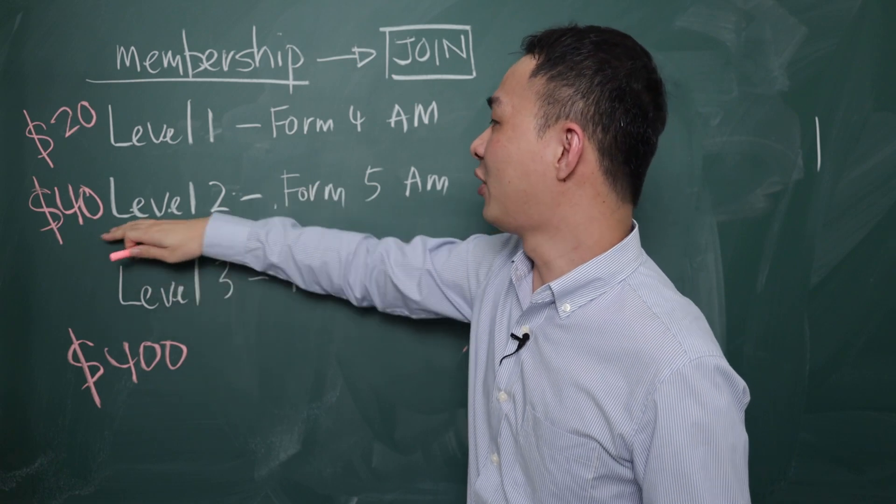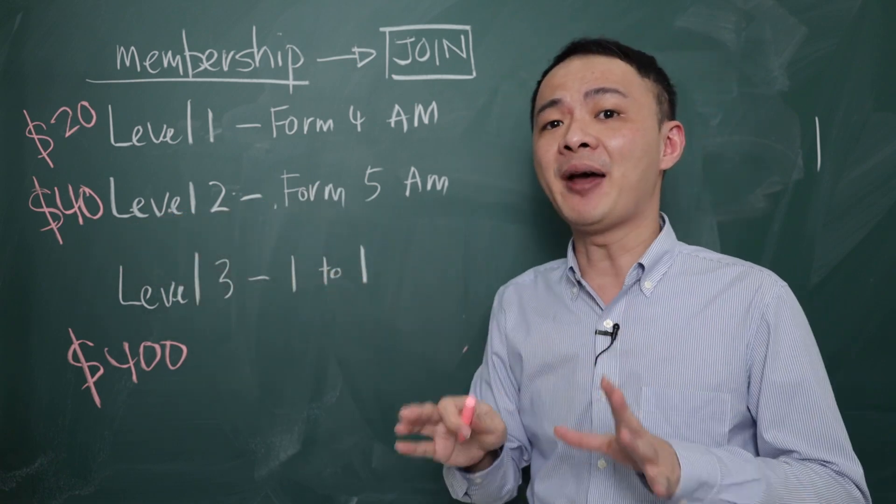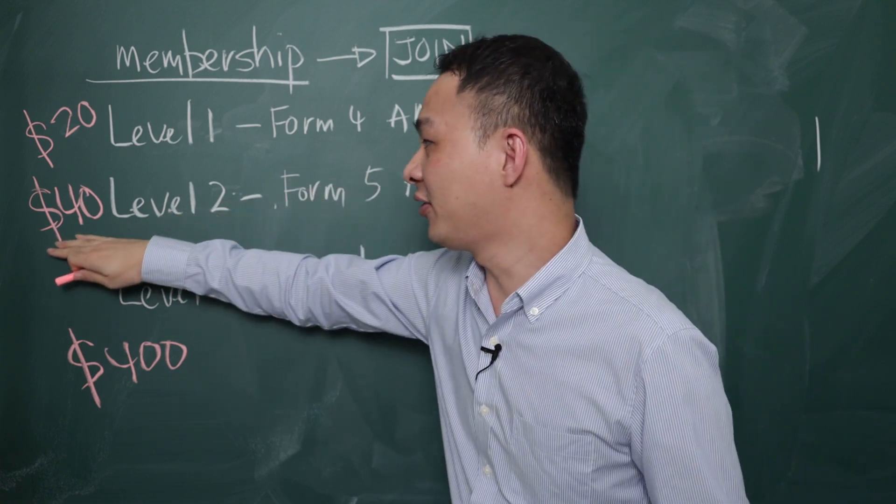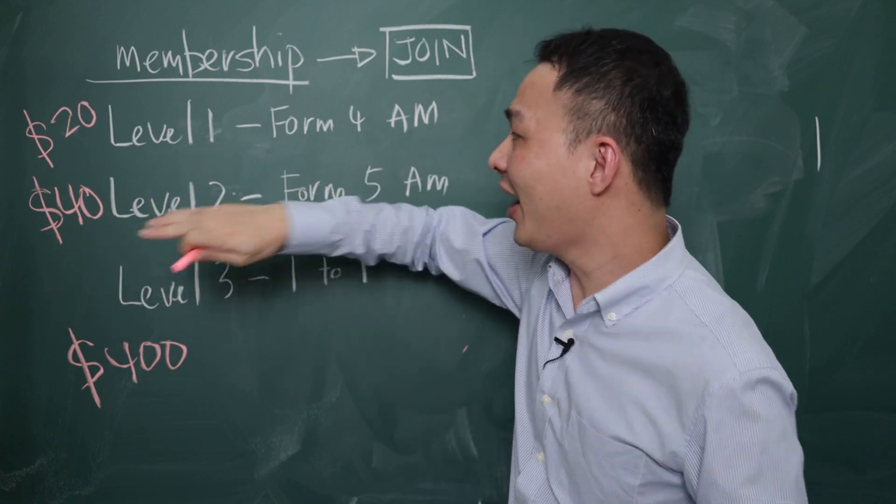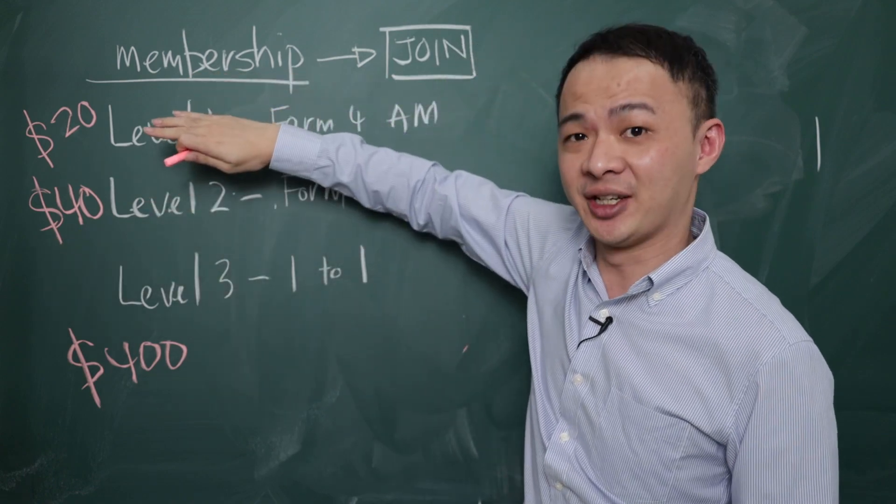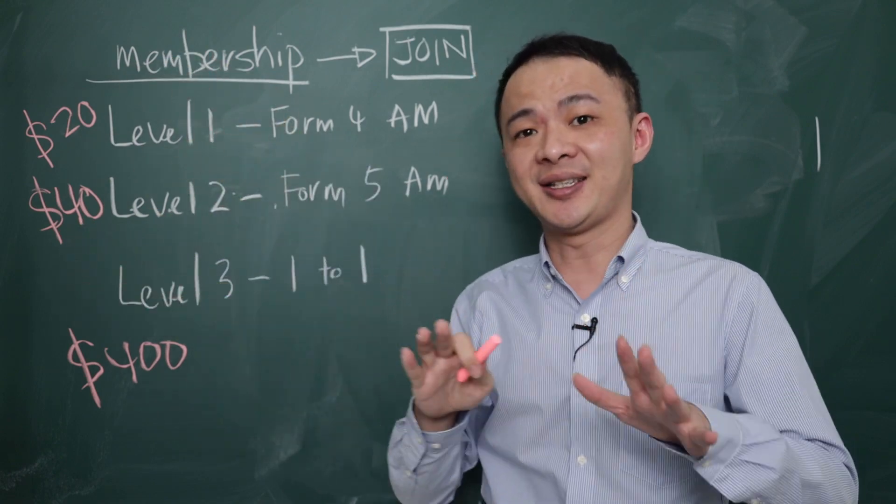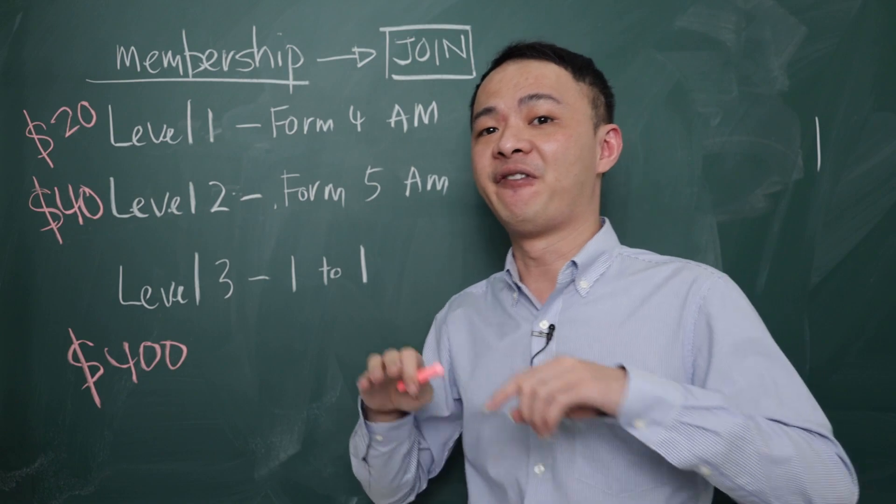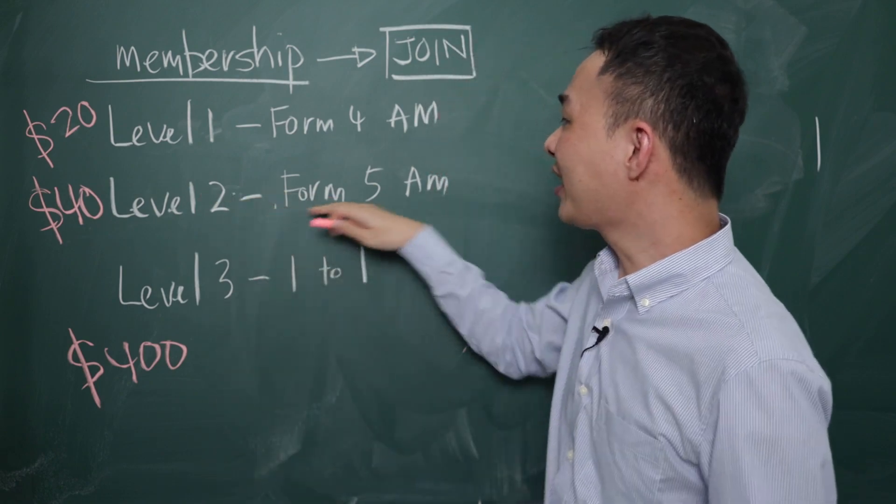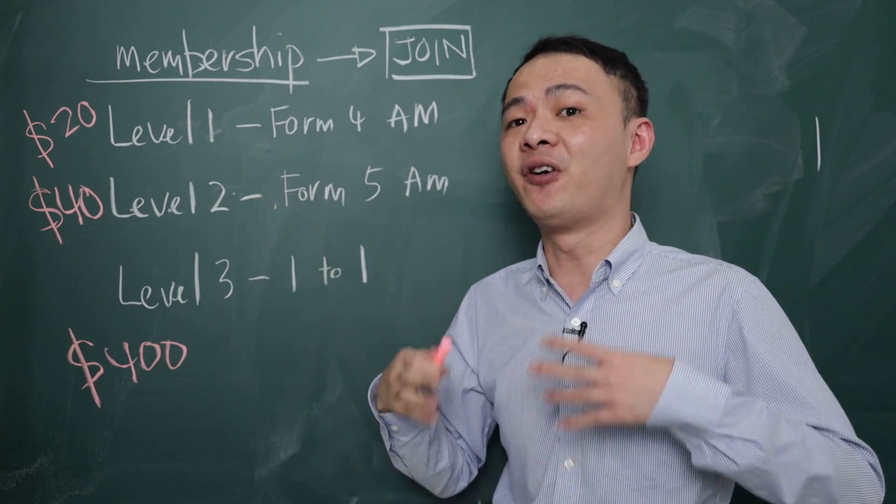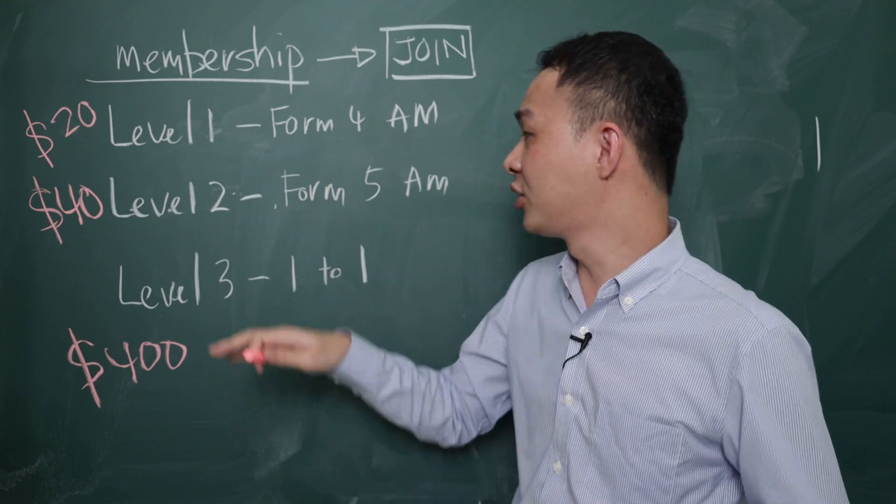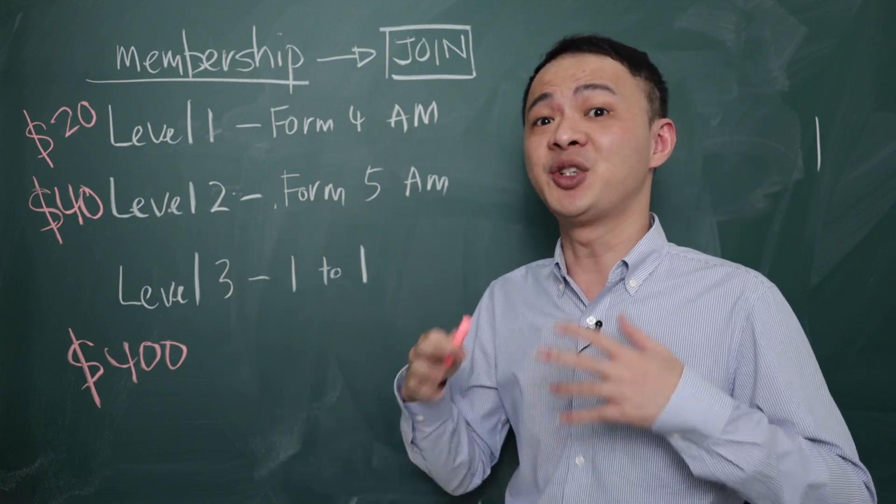And then if you sign up for level 2, it's like Form 5 MF, but when you sign up for the RM40 per month one, you will already have the Form 4 class already, because this is how the tier system works. So the RM40 I can say is for the Form 4 and Form 5 classes. So for Form 5 classes, you will also have about 4 hours per month, like 1 hour each week.